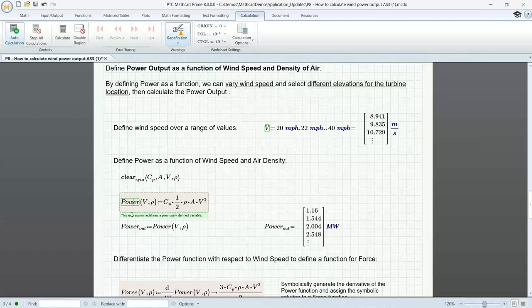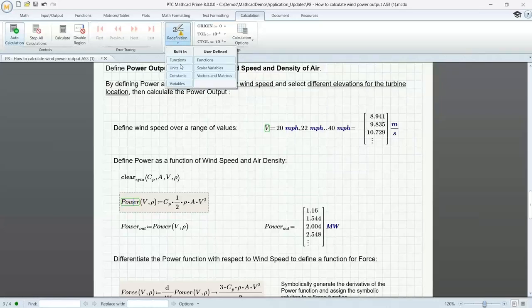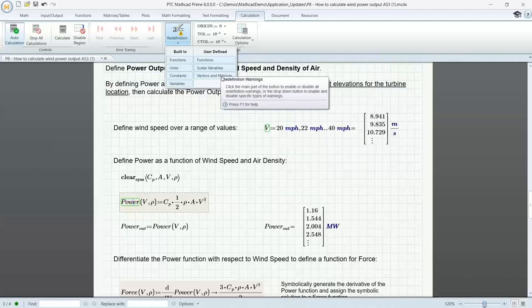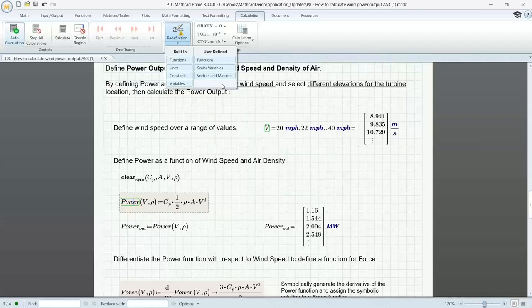And we can also decide exactly which things should trigger this warning. So we have some built-in ones and also some user-defined warnings that we can set up. And really, a lot of the time that we see those changes, they tend to be intentional. But if they were not intentional, it's very important that we see that. And it's really ensuring the integrity of the calculations in our worksheet.